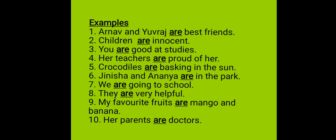Next one, number six: Janisha and Ananya are in the park. Same — Janisha and Ananya, there are two girls. That's why I am using Are over here. Number seven: we are here. Number eight: they are going to school. They — they ka matlab way, ek nahi hain, bahut saray hain. So I will use Are here.